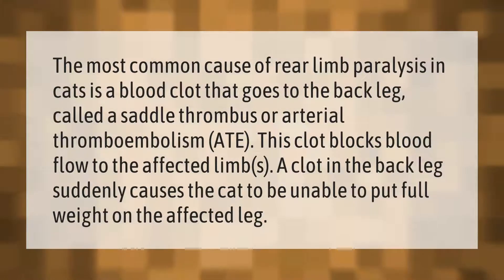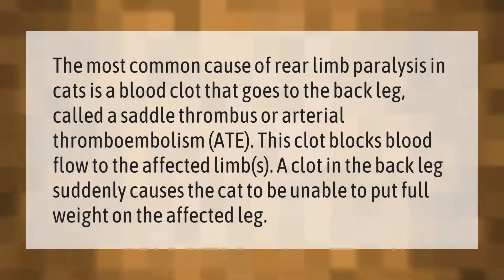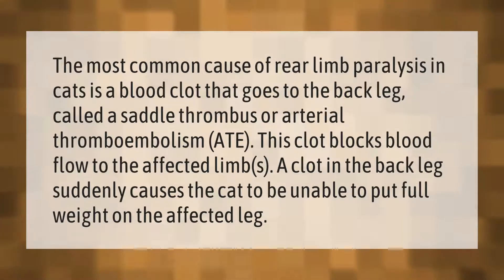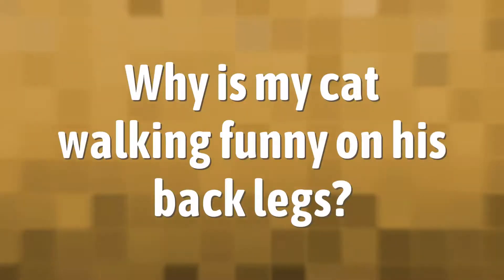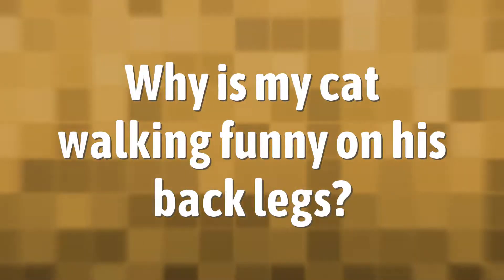The most common cause of rear limb paralysis in cats is a blood clot that goes to the back leg, called a saddle thrombus or arterial thromboembolism. This clot blocks blood flow to the affected limbs. A clot in the back leg suddenly causes the cat to be unable to put full weight on the affected leg.